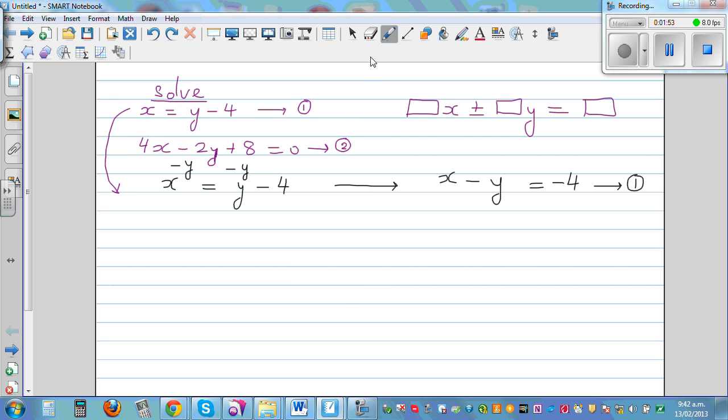Now this equation, let me write equation 2 again. 4x minus 2y plus 8 is equal to 0. I don't want this plus 8 sitting here, so I'm going to take away 8 from this side. So this becomes 4x minus 2y is equal to negative 8. 0 take away 8 is negative 8. This is equation 2.